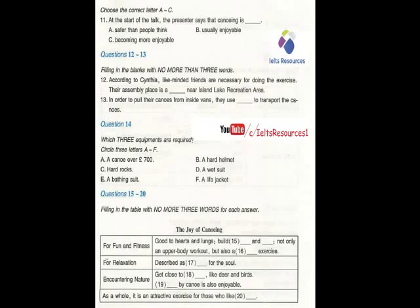Usually, we assemble in a parking shelter near the Island Lake Recreation Area. We pull our canoes from inside the vans, lift them from atop the cars and trucks, and attach wheels to help transport them to the shores of the lake beside the boat dock.